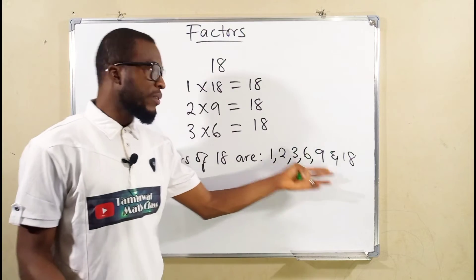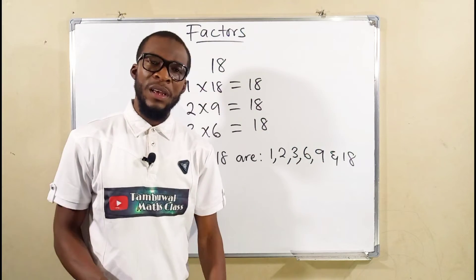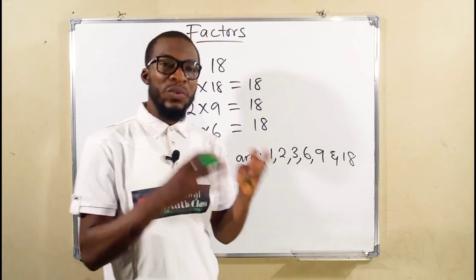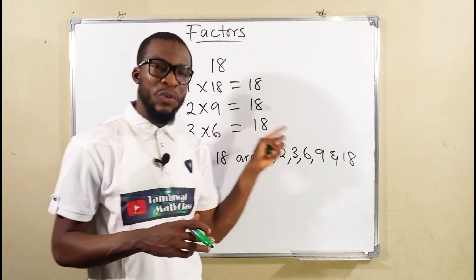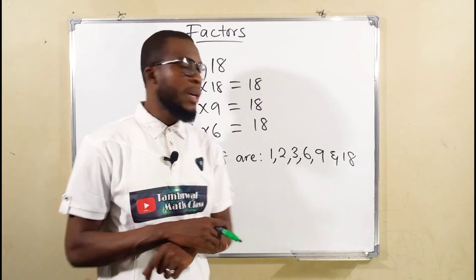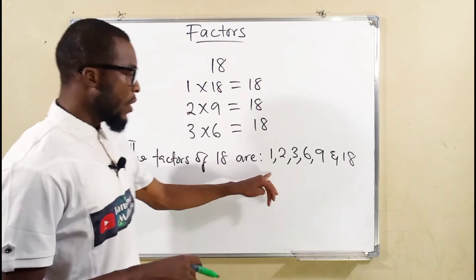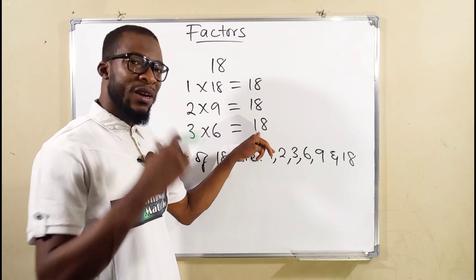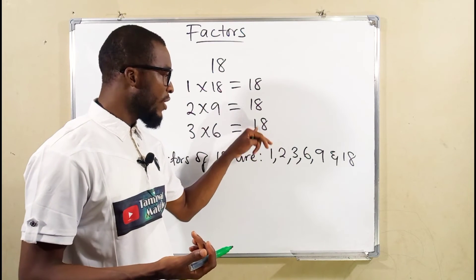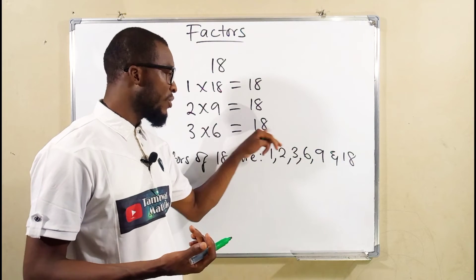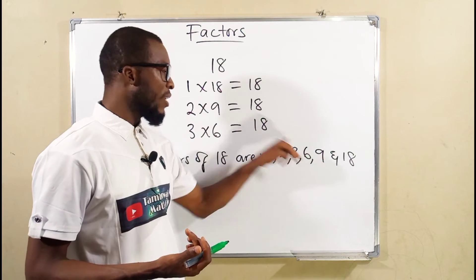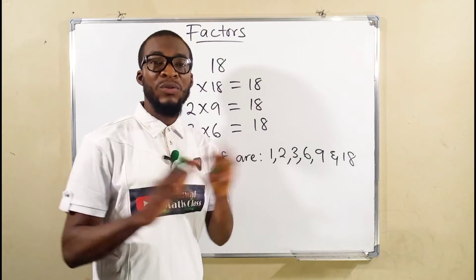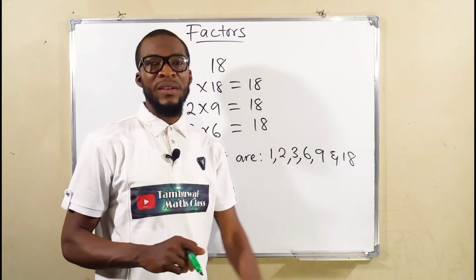All these 6 numbers are factors of 18. In another view, we say factors of any number are all those numbers that can go into that number without remainder. If you can see here, 1 can go into 18 18 times, 2 can go into 18 9 times, 3 can go into 18 6 times, 6 can go into 18 3 times, 9 can go in 2 times, 18 can go there 1 time without remainder. So they are all factors of 18.